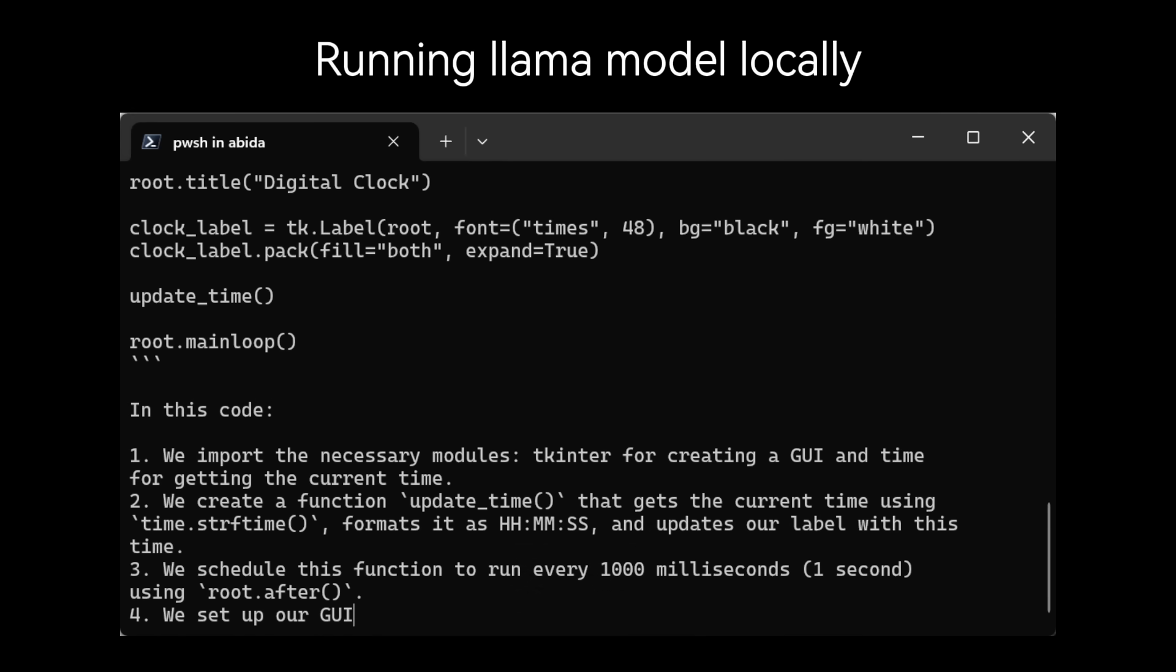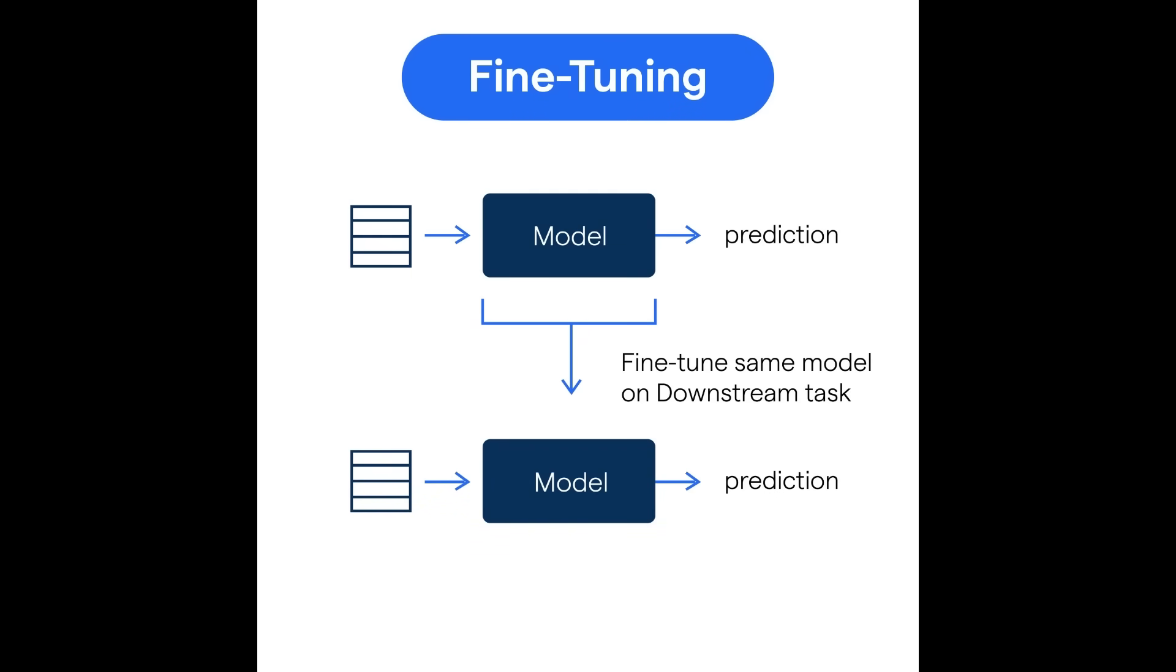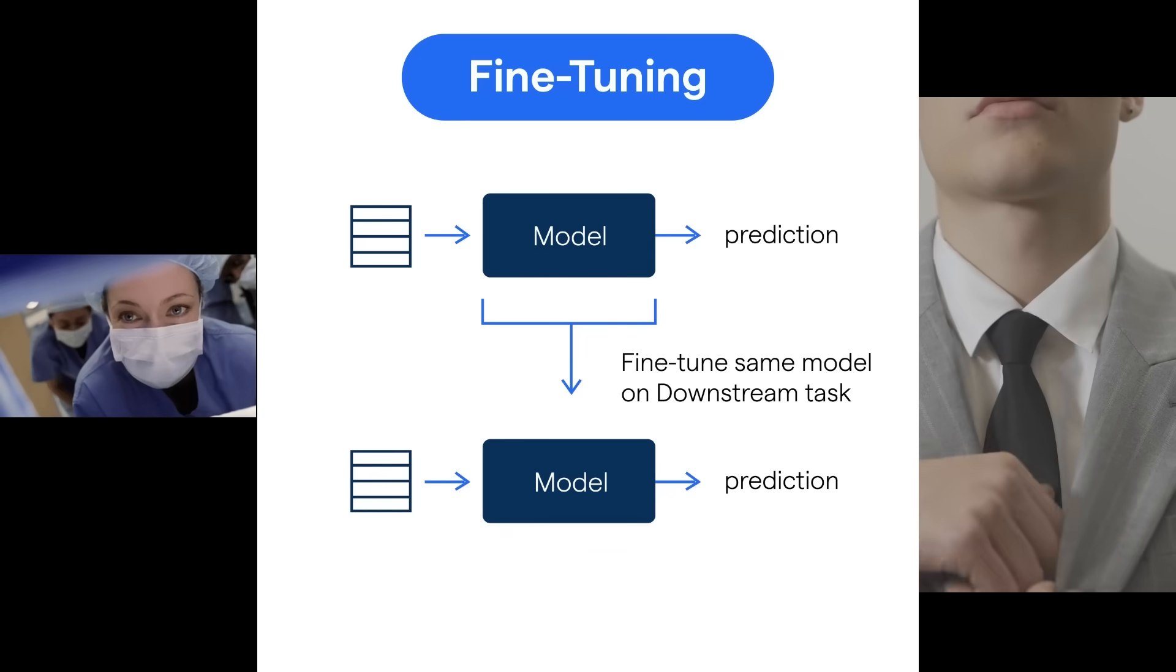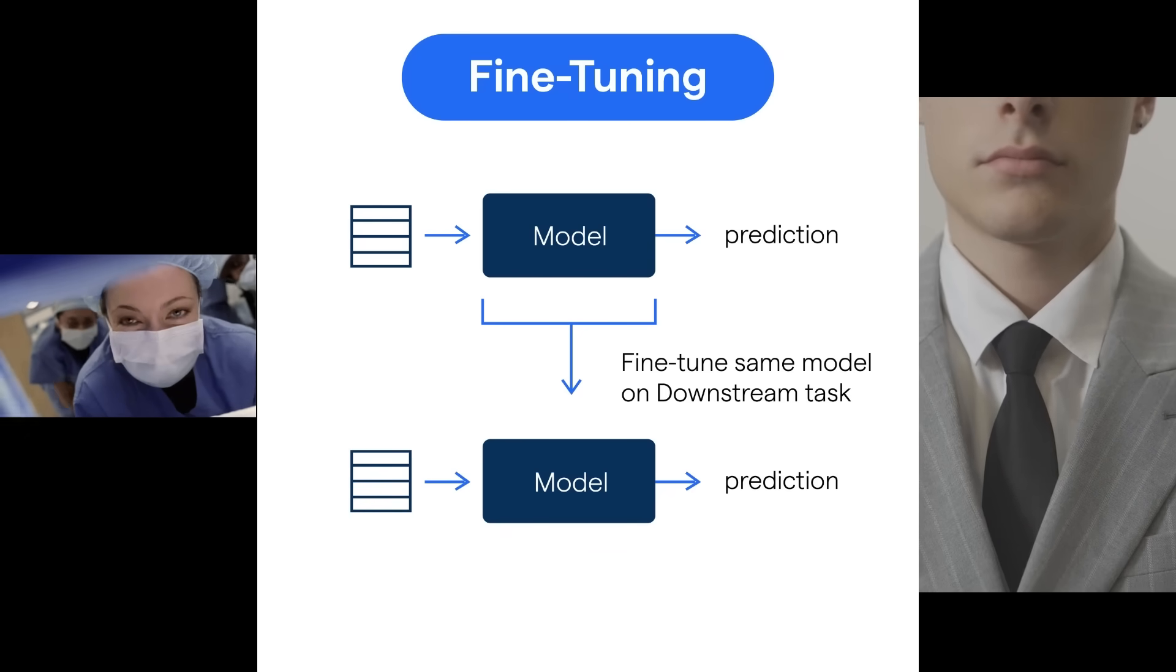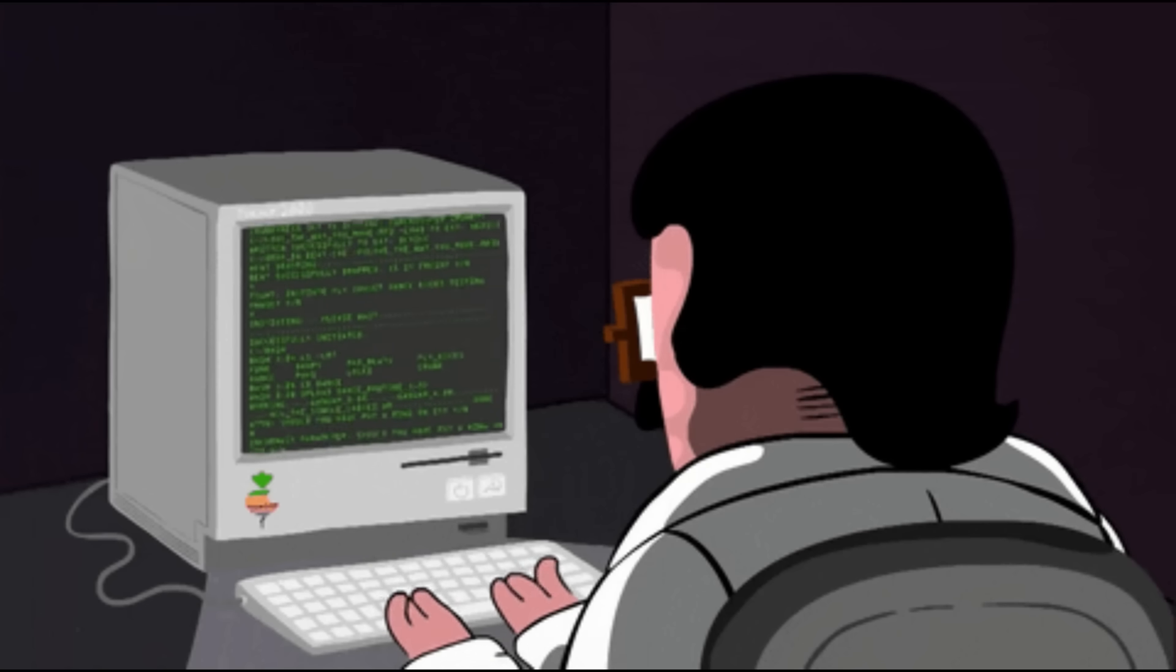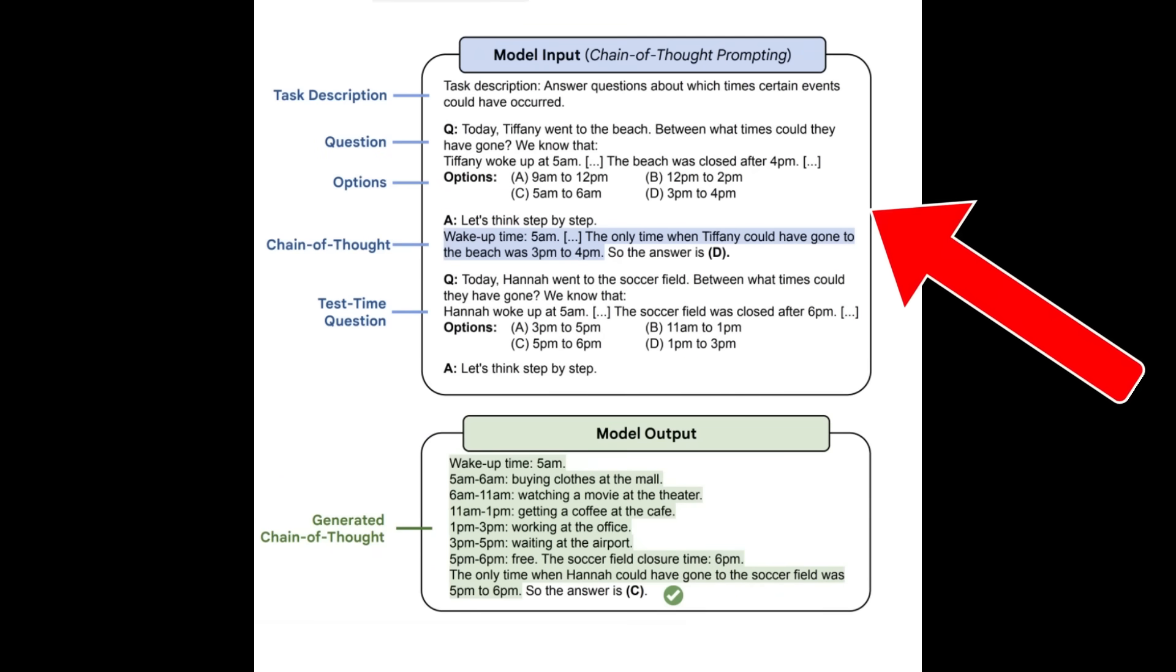So why fine-tune? Fine-tuning is useful when you want to embed domain expertise. Say, a medical assistant should use clinical terminology correctly. Or enforce style or tone. Let's say you have a customer support chatbot and you want it to be polite, concise, and on-brand. Or let's say you want to specialize behavior, for example models can be tuned for summarization, classification, or code generation. And finally, you can reduce prompt complexity. Instead of stuffing long prompts, the model internalizes the behavior.